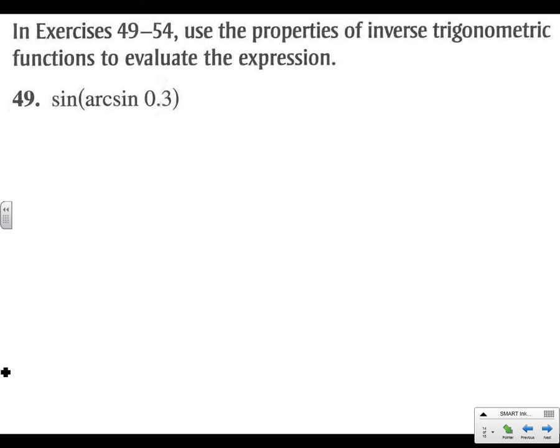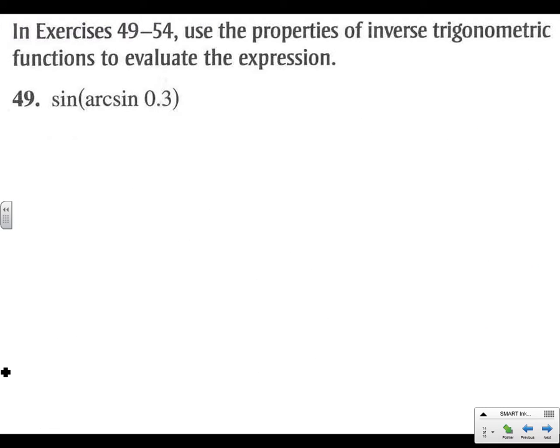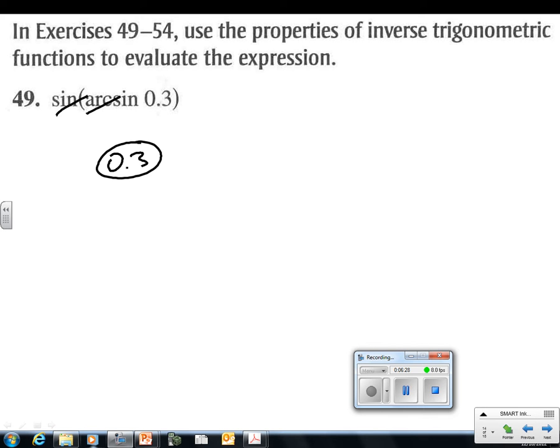If you've given it a shot, I'm going to flip back here. Sine of arcsine. I'm going to look at my restrictions here. Sine of arcsine is this top one. It says x has to be between negative 1 and 1. Let me flip forward here. Is 0.3 between negative 1 and 1? It absolutely is. Those cancel and our answer is just 0.3.